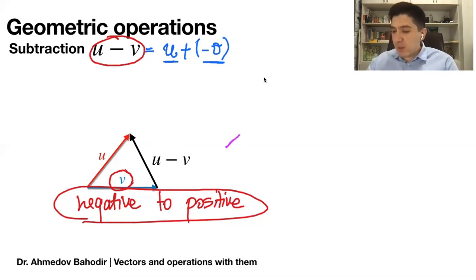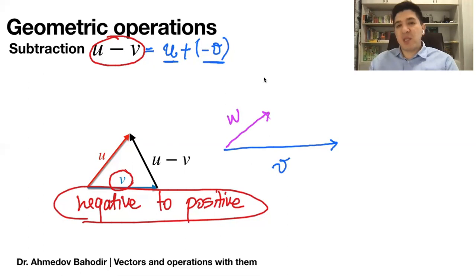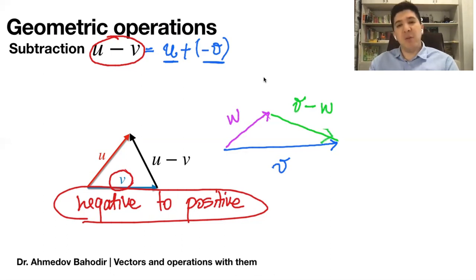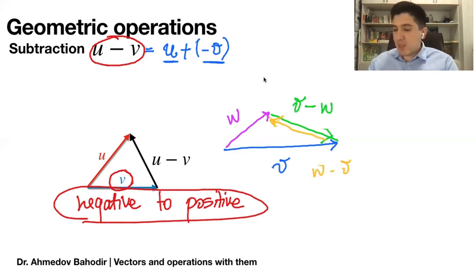Let me give another example. Say you're given two vectors — omega and v. If you would like to subtract them, you connect the ending points. Depending on what operation you're doing, you define the direction. If you are doing v minus omega, then the direction of this vector goes from negative omega to positive v. If you are doing omega minus v, then your vector goes from negative v to positive omega. This is how to add and subtract two vectors geometrically, and this is very important in Linear Algebra where we construct spaces using matrices.